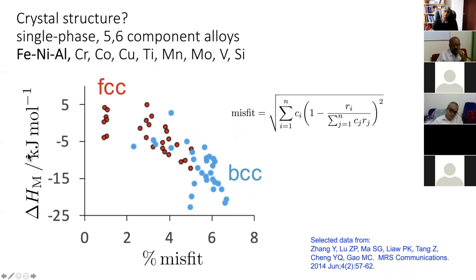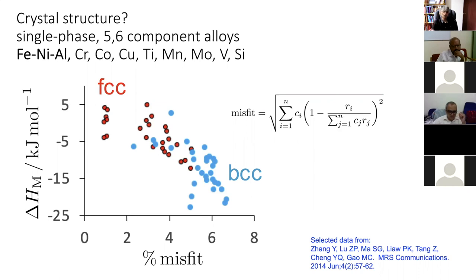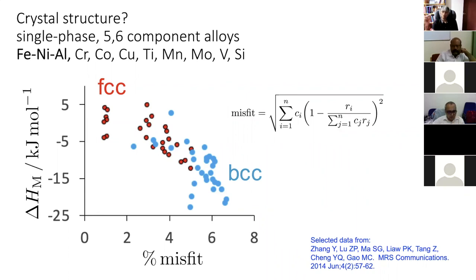Another plot shows entropy of mixing versus percentage atomic misfit for five- and six-component high entropy alloys. The argument is that pure FCC occurs at one extreme and pure BCC at another, but there is considerable overlap in the middle region where both FCC and BCC are observed. This is not a reliable way of predicting whether you'll get FCC or BCC.